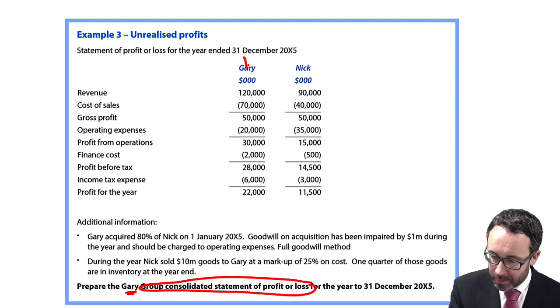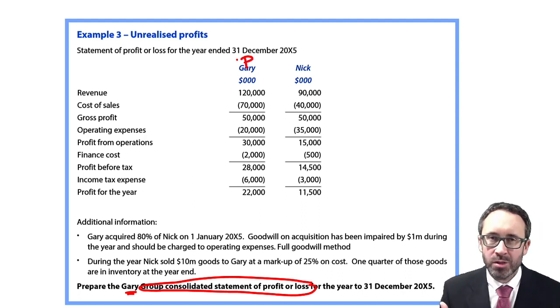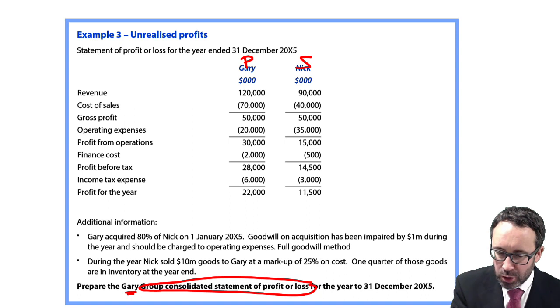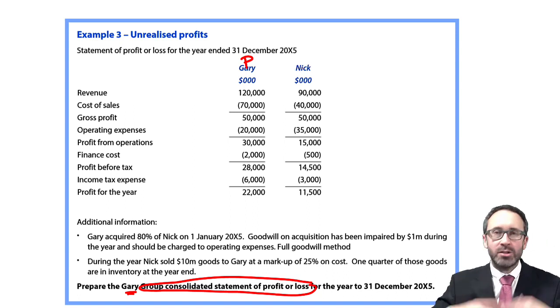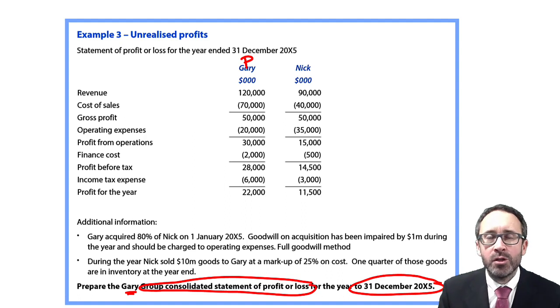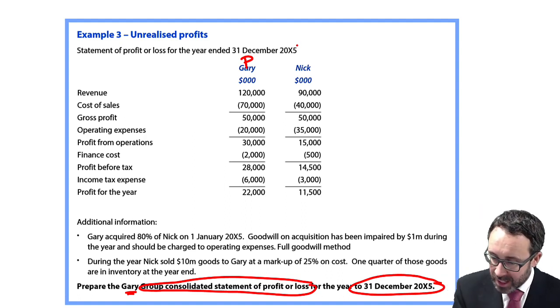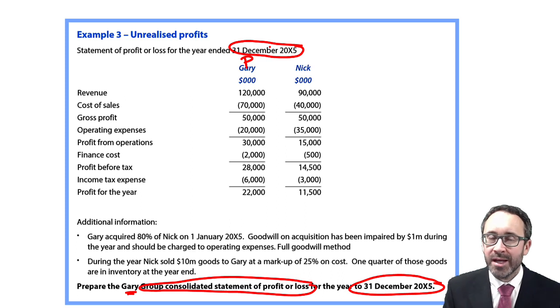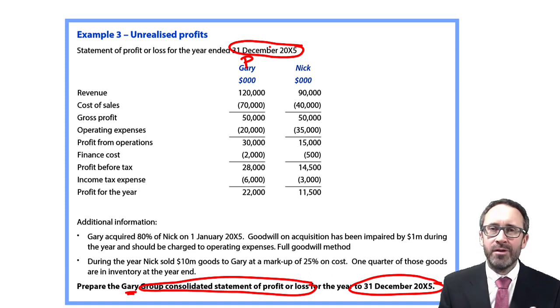Let's get ready to go through Example 3 entitled Unrealized Profits. First thing as always is to go through and read the requirements. It wants our consolidated statement of profit or loss for the Gary Group, so Gary is the parent and Nick by process of elimination is the subsidiary. We want the year ended December 20X5, and we are given the statement of profit or loss for Gary and for Nick at that reporting date of 31st December 20X5. There isn't anything untoward or anything extraordinary that jumps out from those individual statements of profit or loss. You can see the usual revenue, cost of sales, gross profit, operating expenses before we get to profit from operations.